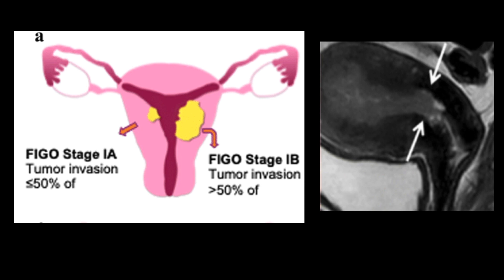Stage 1a is less than 50% myometrial invasion, while stage 1b is greater than 50%, involving the outer half of the myometrium. Some places will do lymph node sampling at stage 1a, and others do lymph node dissection at stage 1b.